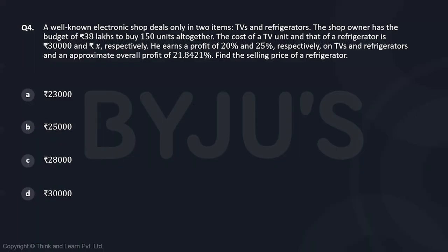A well-known electronic shop deals only in two items: TVs and refrigerators. The shop owner has a budget of Rs. 38 lakhs to buy 150 units altogether. The cost of a TV unit and that of a refrigerator is Rs. 30,000 and Rs. X respectively. He earns a profit of 20% and 25% respectively on TVs and refrigerators, and an approximate overall profit of 21.841%. Find the selling price of a refrigerator.